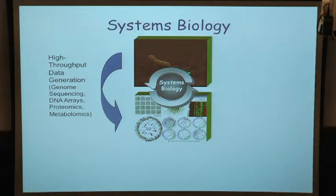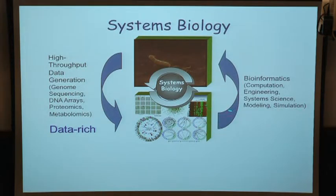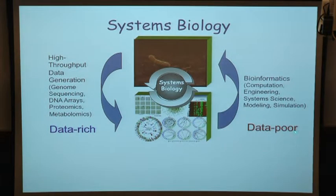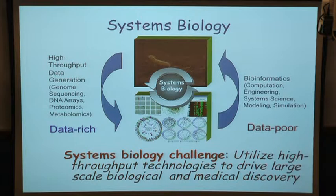In systems biology, what we do initially is take organisms, break them down into their components by making large numbers of measurements. From this point of view, we often think about biology as having become a data-rich science, in the sense that we can generate massive terabytes worth of data. But in bioinformatics, we're trying to put all that information back together, and from this viewpoint biology is still very data-poor. Even the amount of data we can generate today is very little if you're trying to do systems re-engineering — we're still massively in a data-poor, small sample size environment.